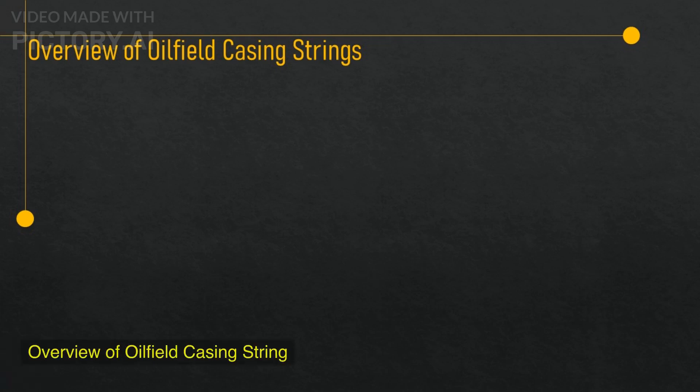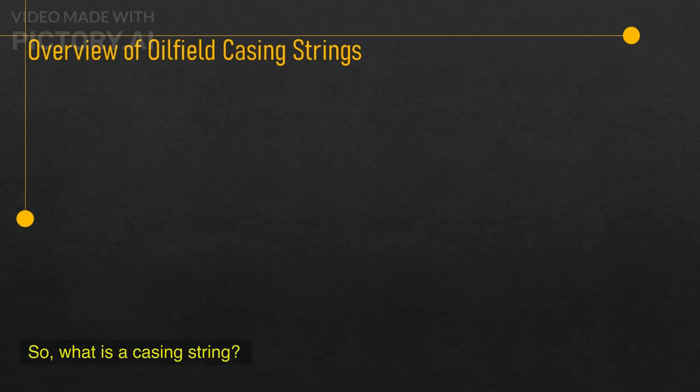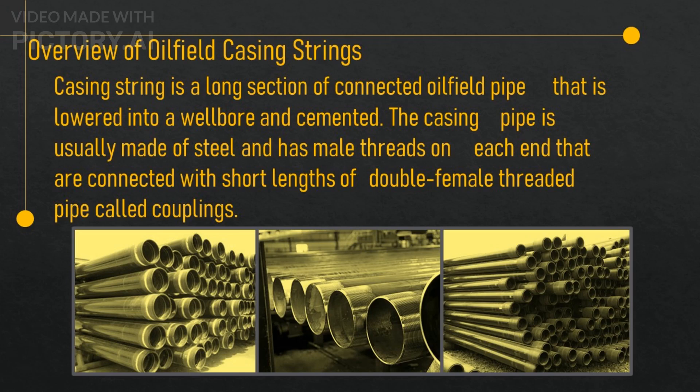Overview of Oilfield Casing String. So, what is a casing string? Well, in simple terms, a casing string is a long section of connected oilfield pipe that is lowered into a wellbore and cemented. The casing pipe is usually made of steel and has male threads on each end that are connected with short lengths of double female threaded pipe called couplings.